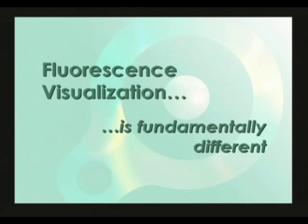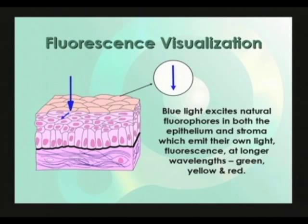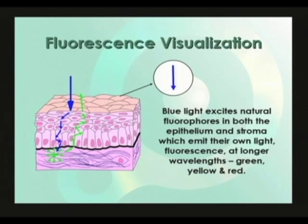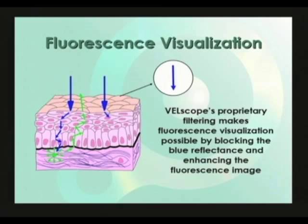Fluorescence visualization is fundamentally different. When we illuminate the tissue with light of an appropriate wavelength, such as blue light, it enters the tissue just as it does for reflectance, but now it can be absorbed by special naturally occurring molecules called fluorophores. These fluorophores absorb the blue excitation light and then re-emit light at a longer wavelength — green, yellow, or red — a fraction of a second later. Blue light excites fluorophores in both the epithelium and the stroma. The natural fluorescence from the tissue is relatively dim, so the VELscope handpiece blocks the much brighter reflected blue light, and proprietary filtering optimizes contrast between normal and abnormal tissue.